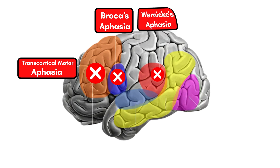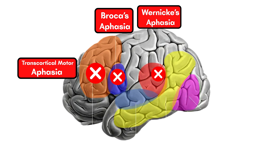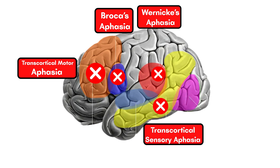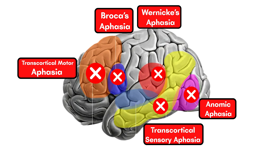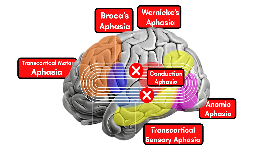The next common one is Wernicke's aphasia. It impairs a person's ability to understand language, despite having fluent and grammatically correct speech. If the lesion is near the temporal lobe, the transcortical sensory area gets involved, and this is called transcortical sensory aphasia. If the visual area is involved, visual processing is impaired, and it is called anomic aphasia. If the lesion has involved the arcuate fasciculus, conduction is impaired, and therefore it is called conduction aphasia.